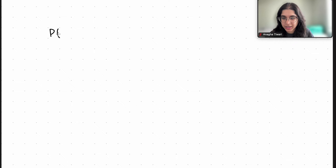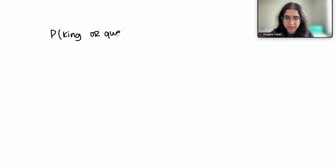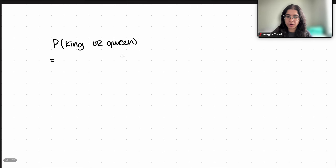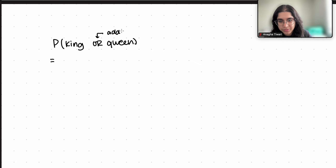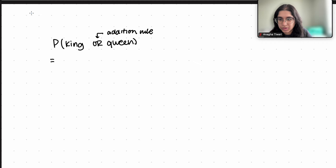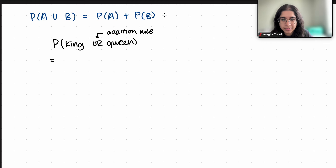My probability statement is going to look something like: probability of a king or probability of getting a queen. First, we should go over the addition rule, because that's what we're going to use. Since this is an 'or', we use the addition rule: P(A or B) = P(A) + P(B) − P(A and B).